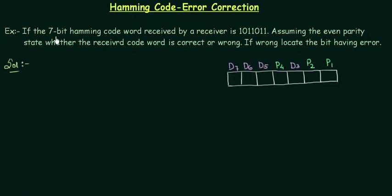In this it is mentioned that we are having a 7-bit Hamming code. You can see the receiver is receiving this bit stream written here: 1011011. Assuming the even parity, now the even parity is there. Whether the received code is correct or wrong, we have to find out and also we have to locate the bit having error.